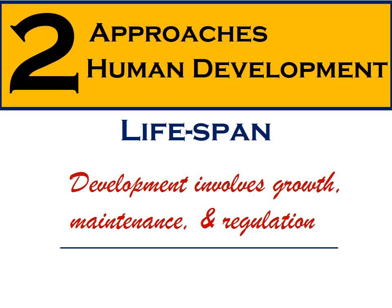Growth and maintenance are three goals of human development. The goals of individuals vary among developmental stages. For instance, as individuals reach middle and late adulthood, concern with growth gets into the backstage, while maintenance and regulation take the center stage.